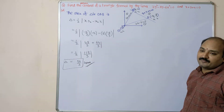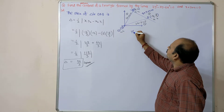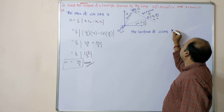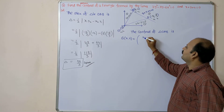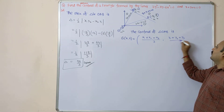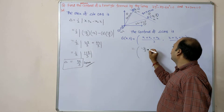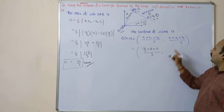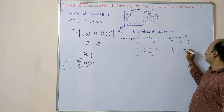Next, the centroid of the triangle OAB. The general formula is G(x, y) = ((x₁ + x₂ + x₃)/3, (y₁ + y₂ + y₃)/3). Substituting: x-coordinate = ((-4/3) + 8 + 0) / 3, and y-coordinate = ((-8/3) + (-12) + 0) / 3.